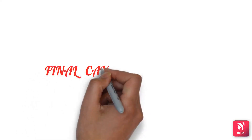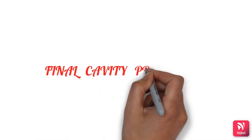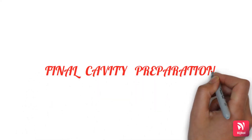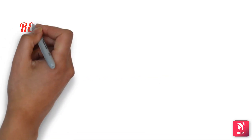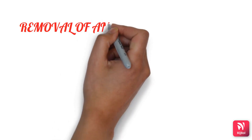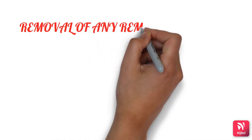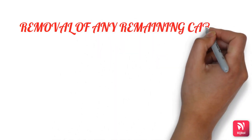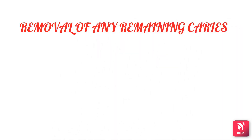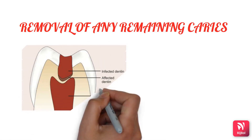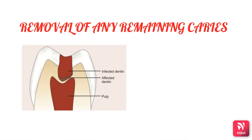Till now we have seen the initial cavity preparation stages. Now we'll see the final cavity preparation stages. The first one would be the removal of any remaining caries present in the cavity. The deeper portions of the carious dentine exhibit two distinct areas: one is the infected dentine and the other is the affected dentine.